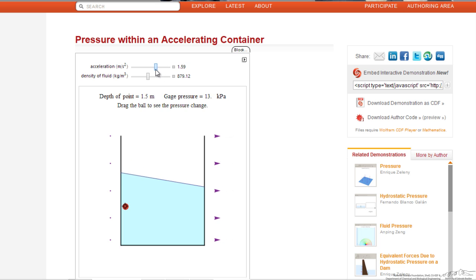It gives you an idea of how the pressure can change anywhere inside of the fluid when we have our container being accelerated in that horizontal direction. Hopefully that gives you a good idea of what we mean by rigid body motion.